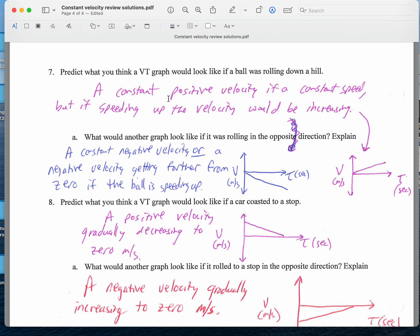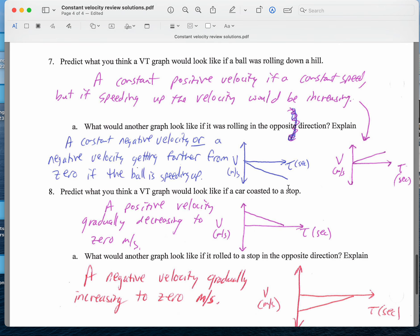Predict what you think a velocity time graph would look like if you roll a ball down a hill. It didn't say whether or not there was friction, which means that could affect whether you think the ball is speeding up or not. So I'm going to take a variety of answers for this. If you think the ball is speeding up, the graph would look like this. So you'd have an increasing positive velocity. If not, if you think it's going at constant speed, then this would be a horizontal line. You could, again, for this one, think of a constant negative velocity or a negative velocity where you're going faster and faster if you're rolling downhill and speeding up in the opposite direction. So this shows something that's getting faster and speeding up in the negative direction.